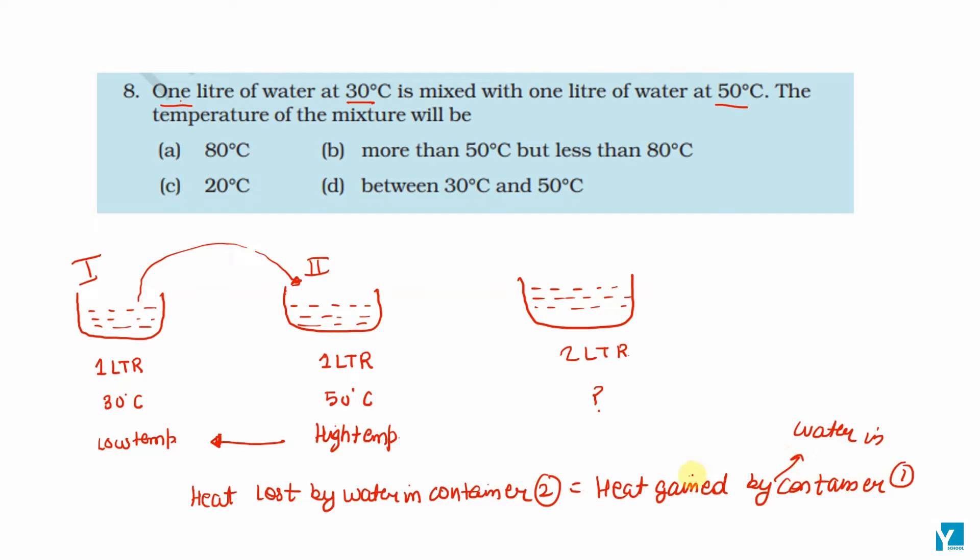So for sure, our temperature will be between 30 degrees and 50 degrees. The final temperature of the mixture, suppose T, will lie between 30 degrees to 50 degrees Celsius. So as per the options, option D is the right answer.